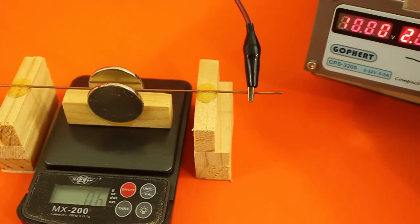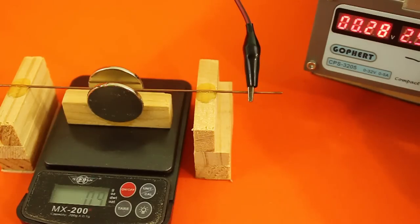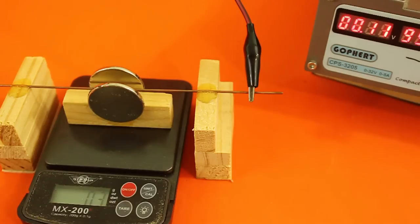And of course, with 3 amps, we will have 0.9 grams of extra weight. Let's return to 1 amp and let's see if we invert the direction of the current.